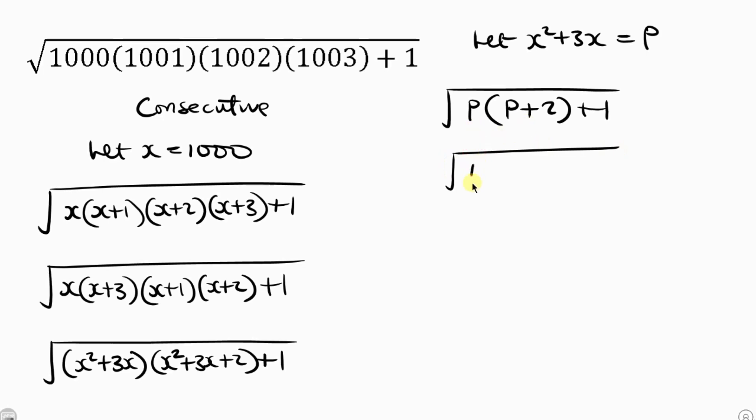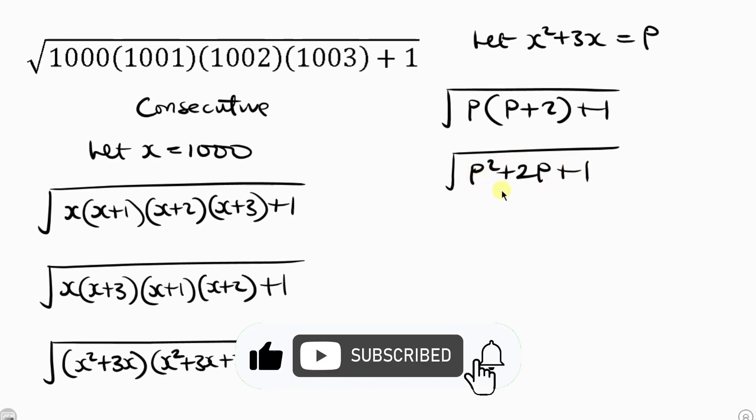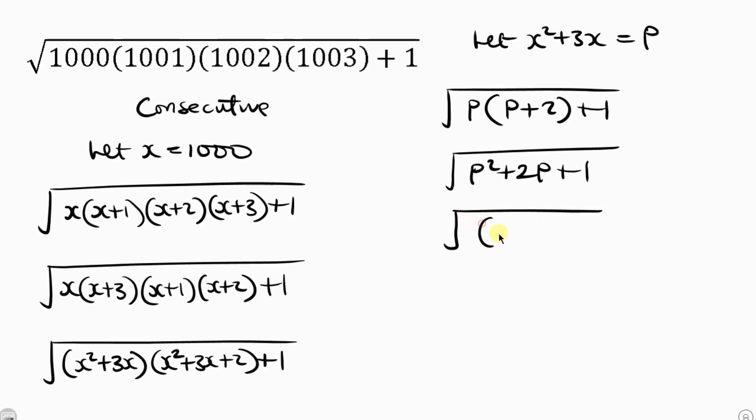So we have p squared plus 2p plus 1. So you notice that we have a quadratic expression which can be factorized into p plus 1 squared.